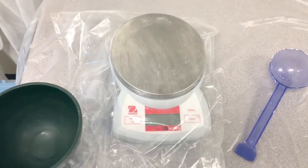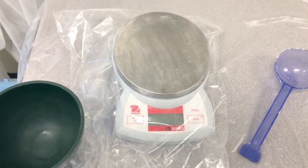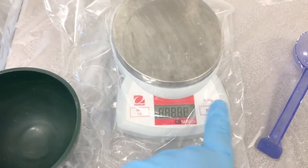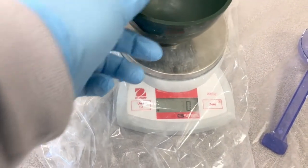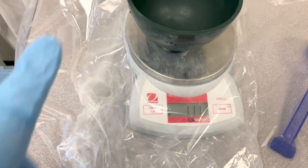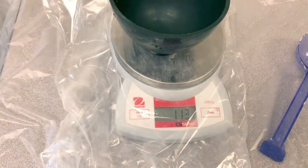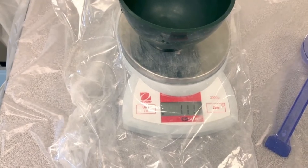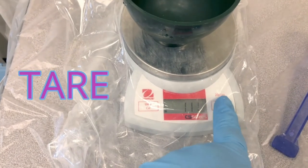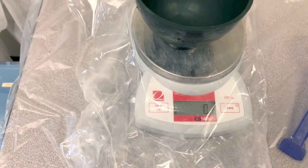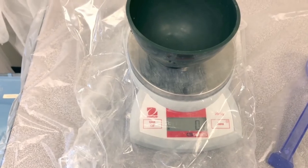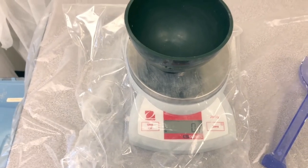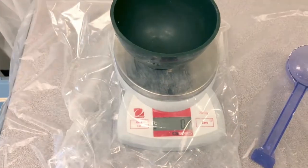Pour this into your mixing bowl. Next we'll measure out the powder. Turn on your scale if it's off and put your bowl on top of the scale. The scale will record the weight of the bowl, so we need to zero this out or tare the scale. Hit zero again to have your scale go back to zero.